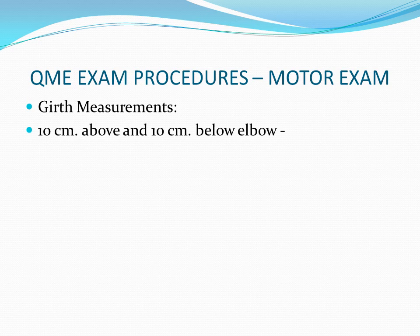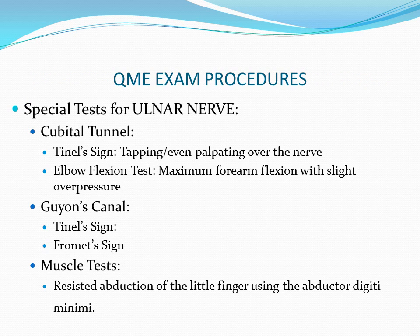To conclude the motor exam, girth measurements are taken to assess for atrophy — at 10 centimeters above and 10 centimeters below the elbow. Before discussing permanent impairments, let's cover special tests for upper extremity entrapment neuropathies — specifically for the ulnar and median nerves.